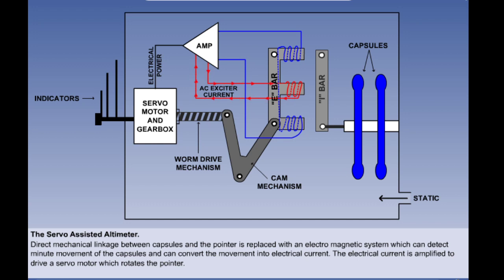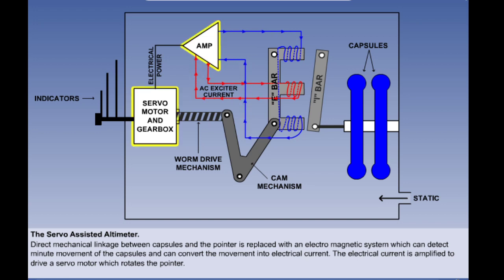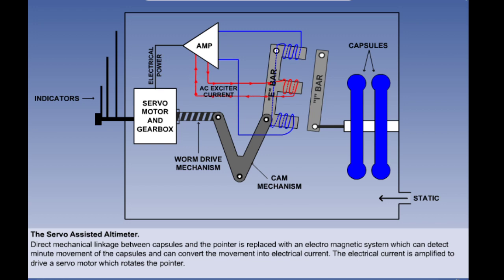When the capsules expand or contract with changes in altitude they move the I-bar on its pivot and the gap between the I-bar and E-bar will change. This causes an imbalance in the magnetic fields and an electrical current will flow in the circuit. The current is amplified and fed to the servo motor which drives the pointer. A worm drive and cam mechanism realigns the I-bar with the E-bar. Once realigned, equilibrium is restored and the altimeter indicates the correct altitude. In practice the E-bar movement and the realignment can be considered to be a single continuous process.